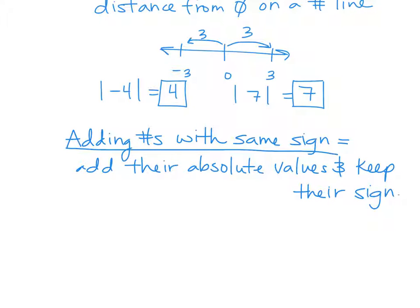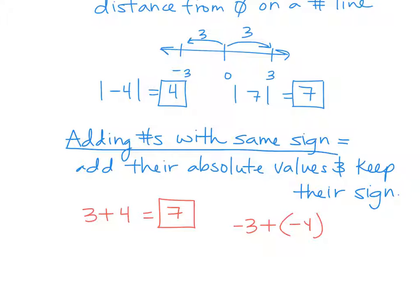That might sound like gibberish right now, but let me explain. If I have something like 3 plus 4, the absolute value of 3 is 3, the absolute value of 4 is 4. So I'm going to add 3 plus 4 and keep the sign of those numbers. Are 3 and 4 positive or negative? They're positive, so I'm going to leave it as a positive. The same is true when it's negatives. If I do negative 3 plus negative 4, the absolute value of negative 3 is positive 3. The absolute value of negative 4 is positive 4. So the sum of them is 7, but then you keep the sign of the two numbers — they were both negative, so I'm going to make it negative.